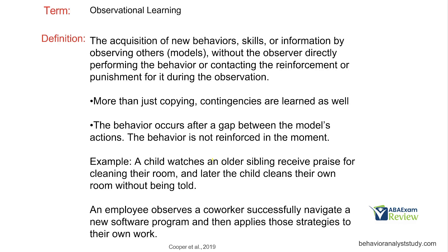Observational learning is the acquisition of new behavior, skills, or information by observing others. We're still observing models and picking up new information and behaviors. However, the observer doesn't directly perform the behavior right away — there's no immediacy. And they don't contact reinforcement or punishment during the observation. That observation leads to new information and skills, but not because we do it immediately or because it contacted reinforcement or punishment. We're not just copying — we're learning contingencies and information about the behavior.